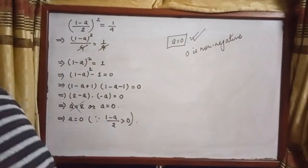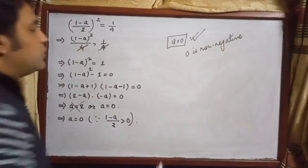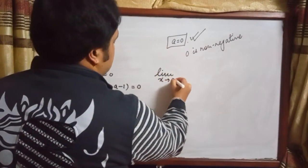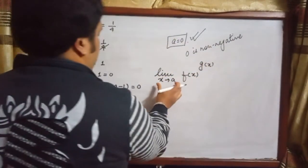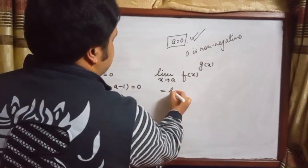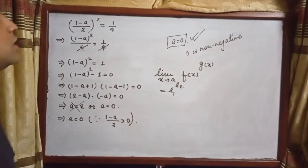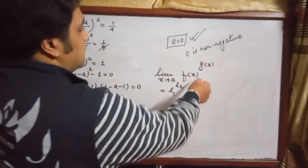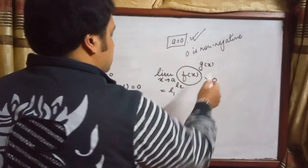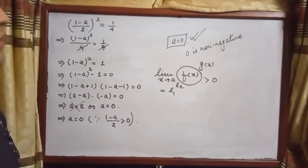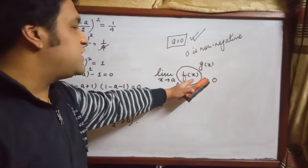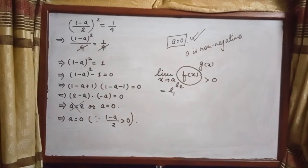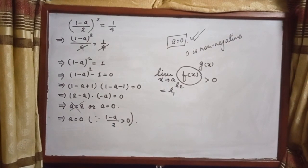Why did I share this question? Because when we see this form f(x)^g(x), we check whether the limits exist, and then apply the result. But you need to remember that the base — the function being raised to a power — needs to be positive, otherwise you'll be in a lot of trouble. Just to remind you of this fact, I discussed this question. Thank you very much. In a few days I'll be continuing with the discussion of concurrency theorems.